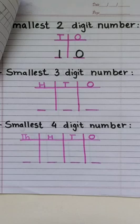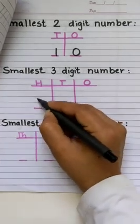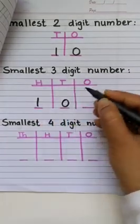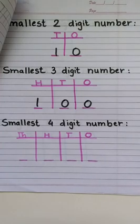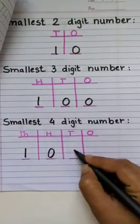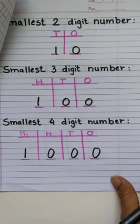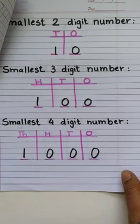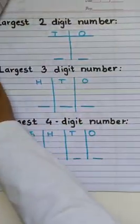Very good. Now, smallest 3-digit number? It's easy to say, right? 100. Smallest 4-digit number? Yeah, 1,000. Thousand. Good. You remember the things well. Now, let's move forward.